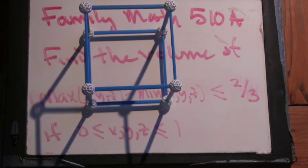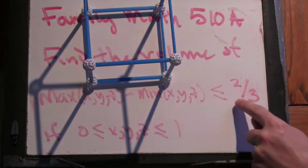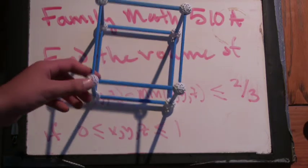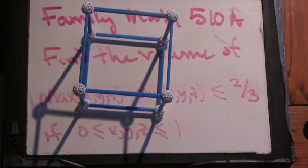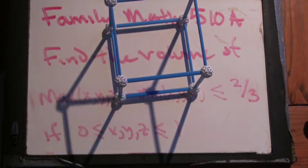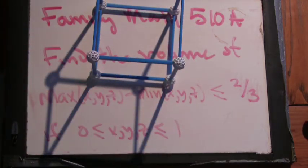All right, now we can start even trying to wonder, what are some points where the maximum value minus the minimum value is less than 2 thirds? Well, any point here where you have a 1 and a 0, like 1, 1, 0, or 1, 0, 1. Why is that? Because the maximum value is going to be 1, minus the minimum value 0. Oh, you want it less than? Yeah, less than. Oh. All right.